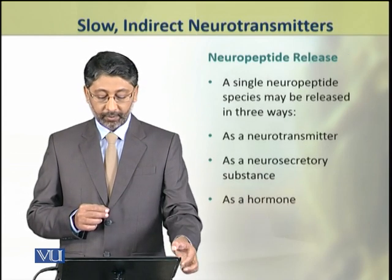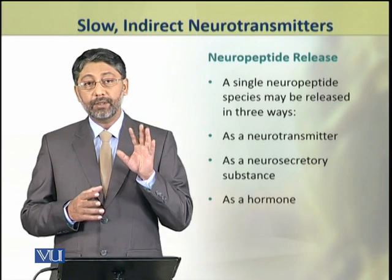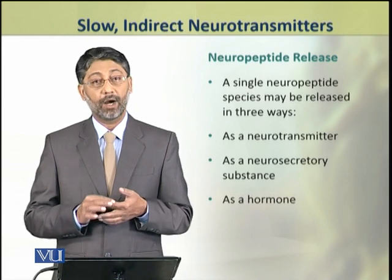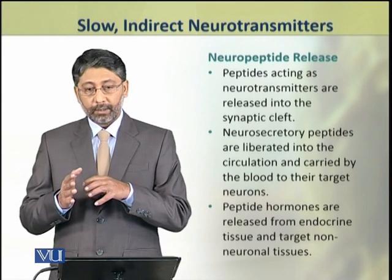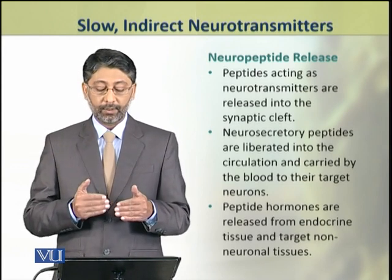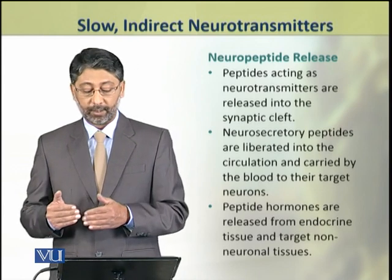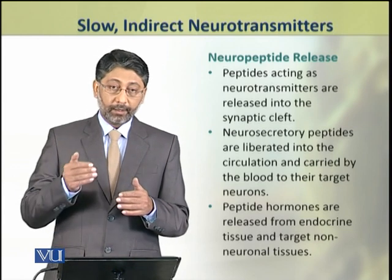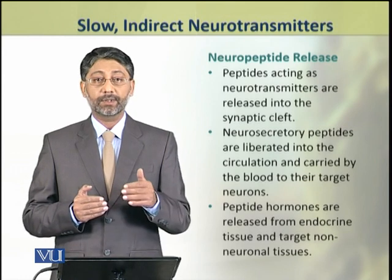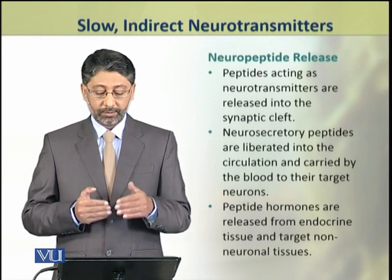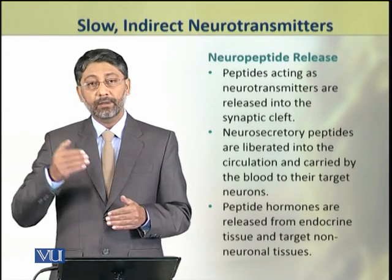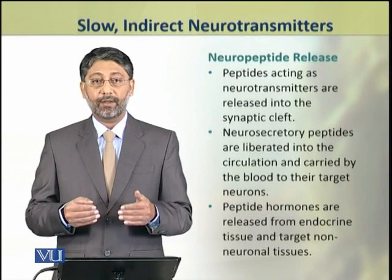Neuropeptides are released in three ways: as a neurotransmitter, as a neurosecretory substance, and as a hormone. When a peptide is secreted by a neuron directly onto another cell, it acts as a neurotransmitter. When a neuropeptide is released into the circulatory system and affects other neurons, that substance is called a neurosecretory substance. When endocrine tissues or glands release a substance that affects non-neural tissues, that is called a peptide hormone.